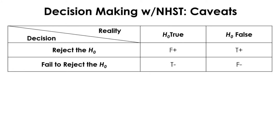In general, the goal of NHST is to decide the location of the true parameter — which is not known to us — based on the sample location. So even though we may never know the true reality, the rules of NHST seem to force us to make a sharp binary decision by either rejecting or failing to reject the null, based on a fuzzy threshold of alpha .05.